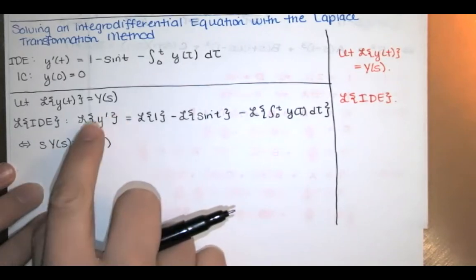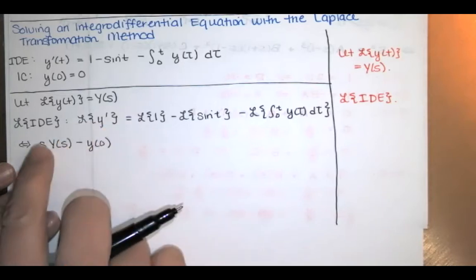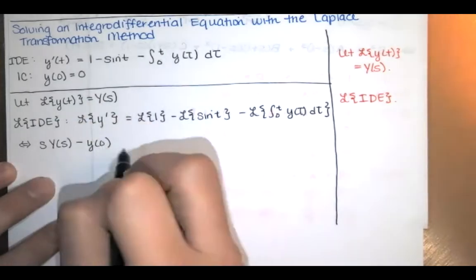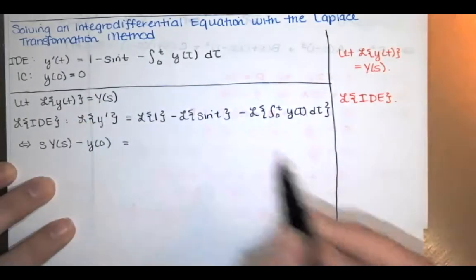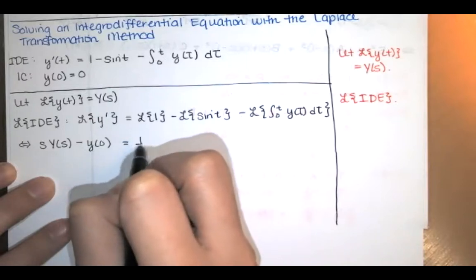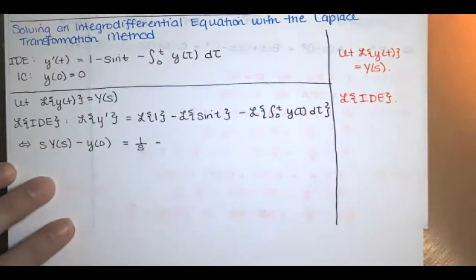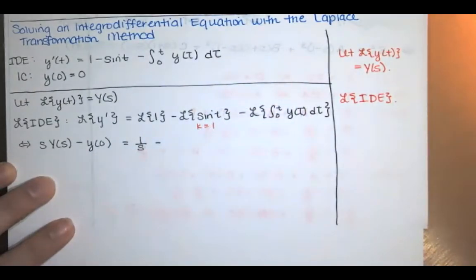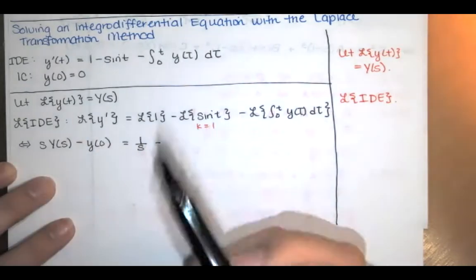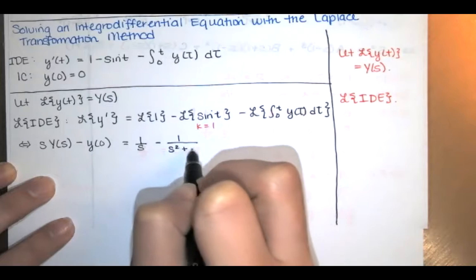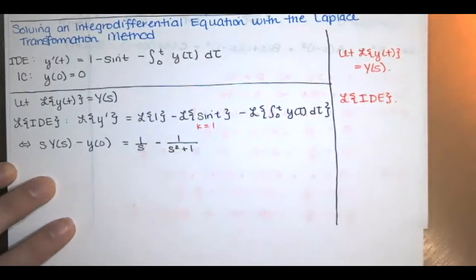Remember, the nth derivative has a Laplace transform with n plus one terms — that's one way you can check. Then we take the Laplace transform of all the functions on the right-hand side. The Laplace transform of 1 is 1 over s. The Laplace transform of sin(kt) is k over s² plus k². With k equals 1, that's 1 over s² plus 1, which is just 1.